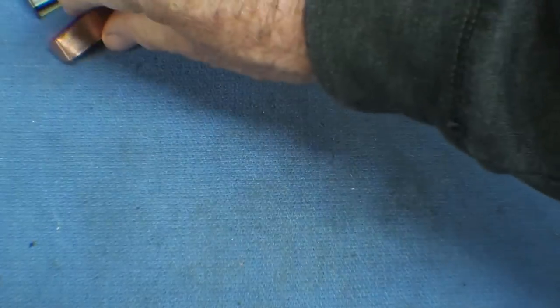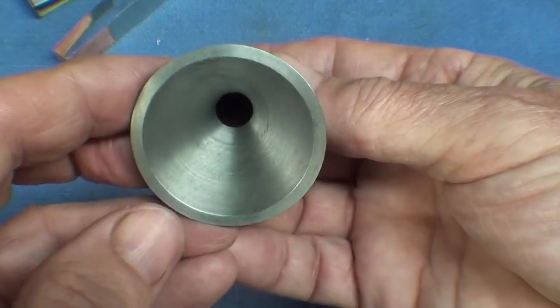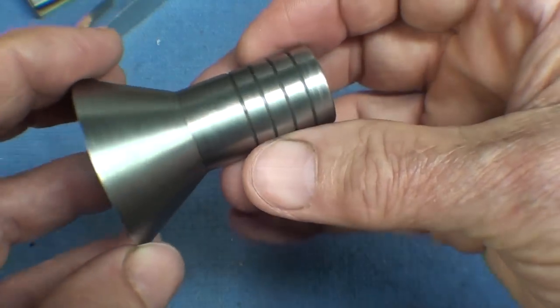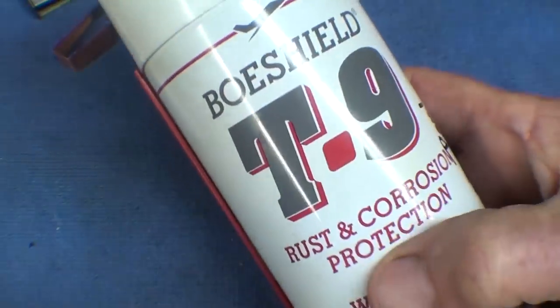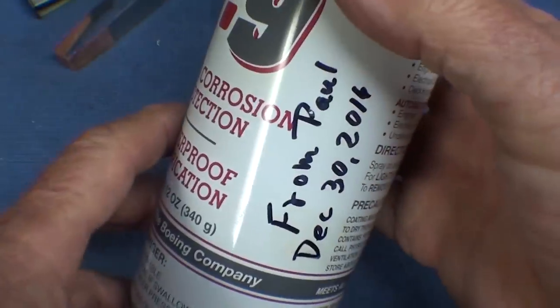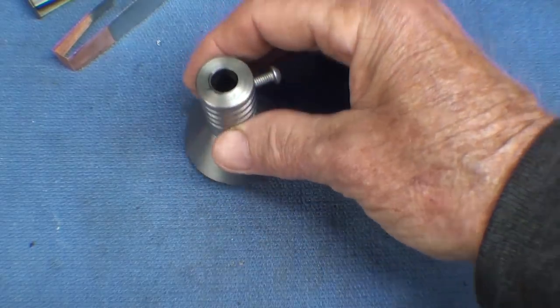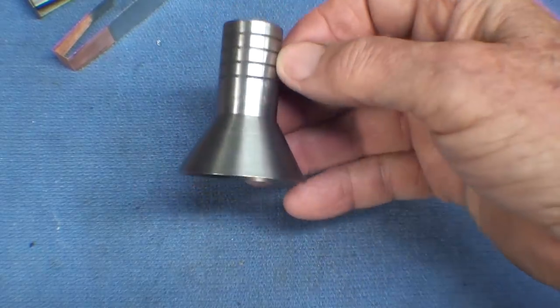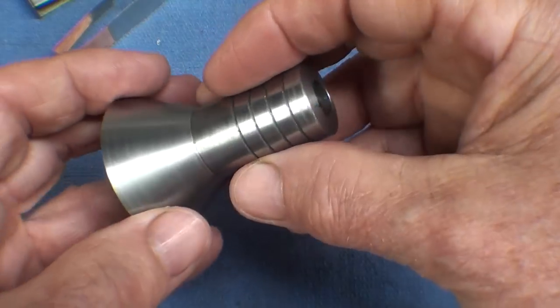Now I have to clean it up thoroughly because this has that Boelube protective coating on it—given to me by Paul—so that has to come off. I am assuming that a good thinner like the brake cleaner will do that, so I'm going to clean that thoroughly. Then I'm going to put it back on the lathe and just lightly with number 500 clean it a little bit more.